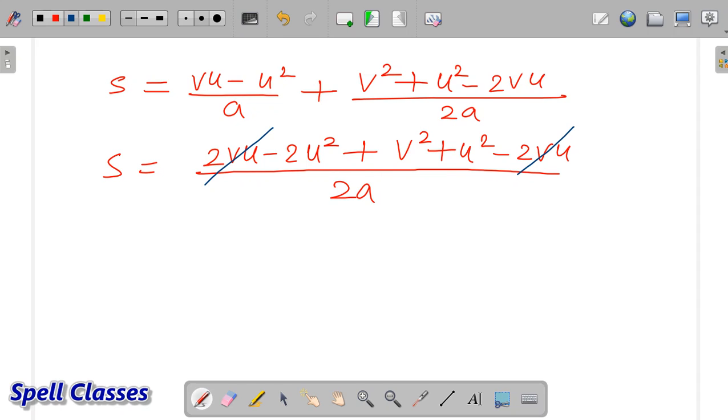The positive and negative cancel. The positive and negative cancel. Cross multiply 2a.